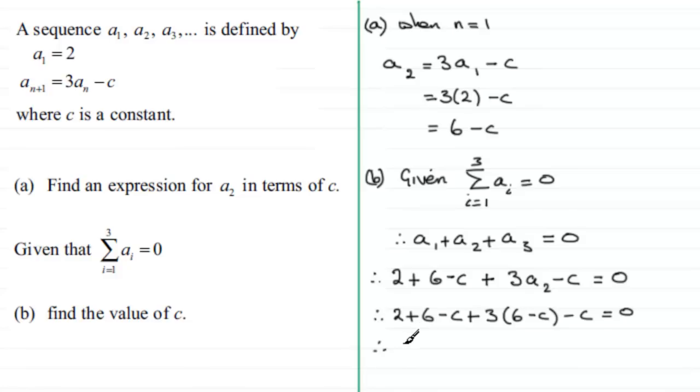2 + 6 is 8, then minus c, plus 3 times 6 which is 18, minus 3c minus that other c equals 0.